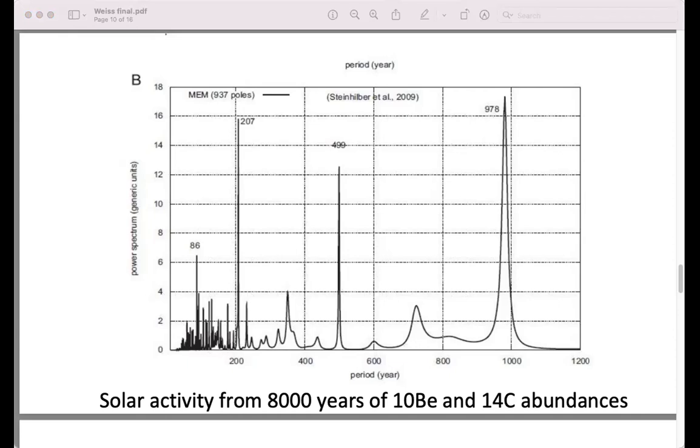Maybe even a speculative continuation of the argument is where do these solar cycles come from? Two years ago, it was shown for the first time that the tides of the planets, in particular Jupiter and Saturn, are influencing the solar magnetic field and the solar activity. The effect of the gravitation of these planets is of course very small.